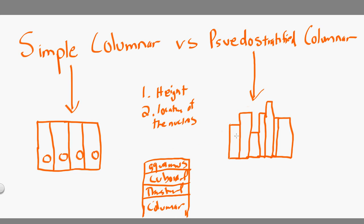The pseudo-stratified columnar is kind of disorganized. The first columnar epithelial cell may have the nucleus at the top, the next one at the bottom, the next one in the middle, and the next one at the top again. Every single columnar cell has the nucleus in a different location. So the pseudo-stratified columnar is really the disorganized one of the columnar epitheliums.